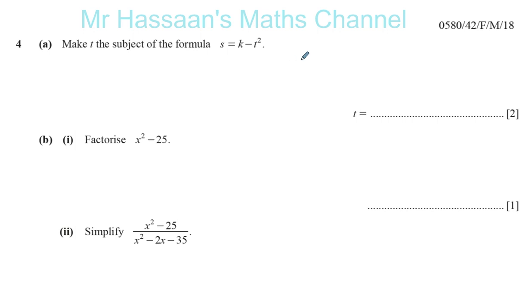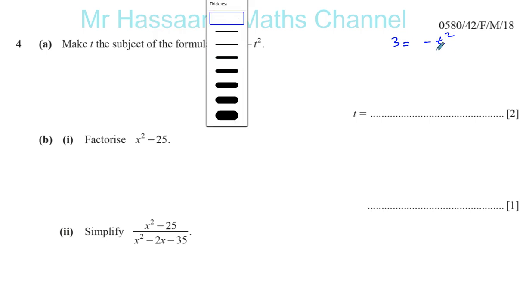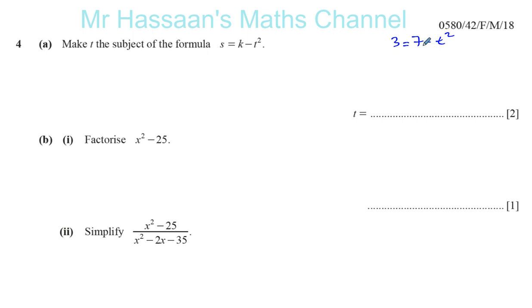So if I was to solve an equation, I have to isolate the letter term. For example, if I had something like 3 equals 7 minus T squared, and I want to solve this equation, I know I have to bring the T on its own and the numbers on their own. I have to keep one side for the letter term and one side for the number term. So when making T the subject of this formula, I have to keep one side for the T.